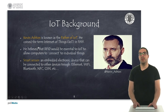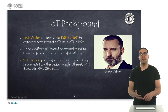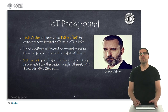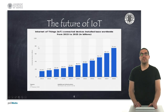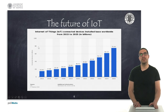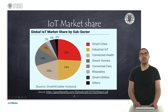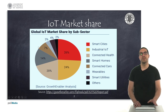In both cases, what we have is an embedded electronic device that can be connected to other devices through Ethernet, Wi-Fi, Bluetooth, or other means, and they are able to sense, operate, and control specific variables or processes. This graph shows the number of devices connected to the Internet of Things growing exponentially. Health and industrial IoT applications, along with smart city applications, are consuming about seventy-five percent of the market share.